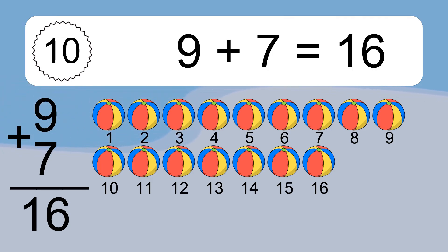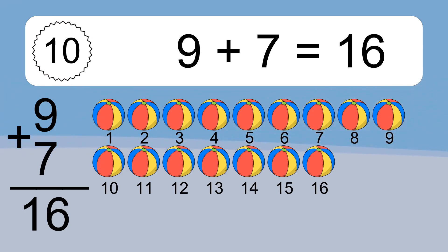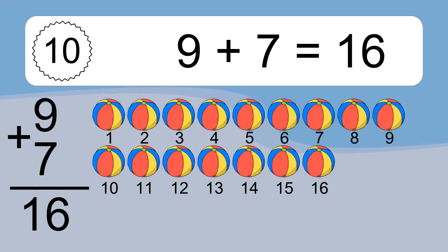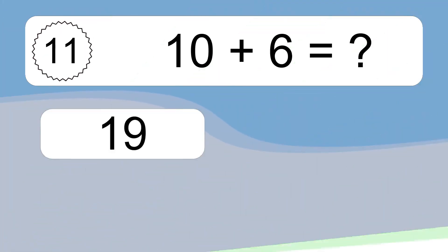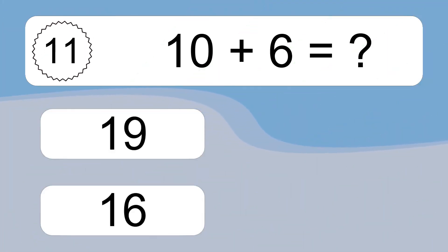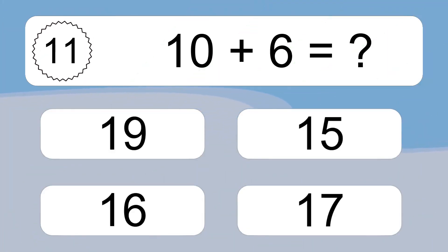9 plus 7 equals what? 9 plus 7 equals 16. Let's count it: 1, 2, 3, 4, 5, 6, 7, 8, 9, 10, 11, 12, 13, 14, 15, 16.